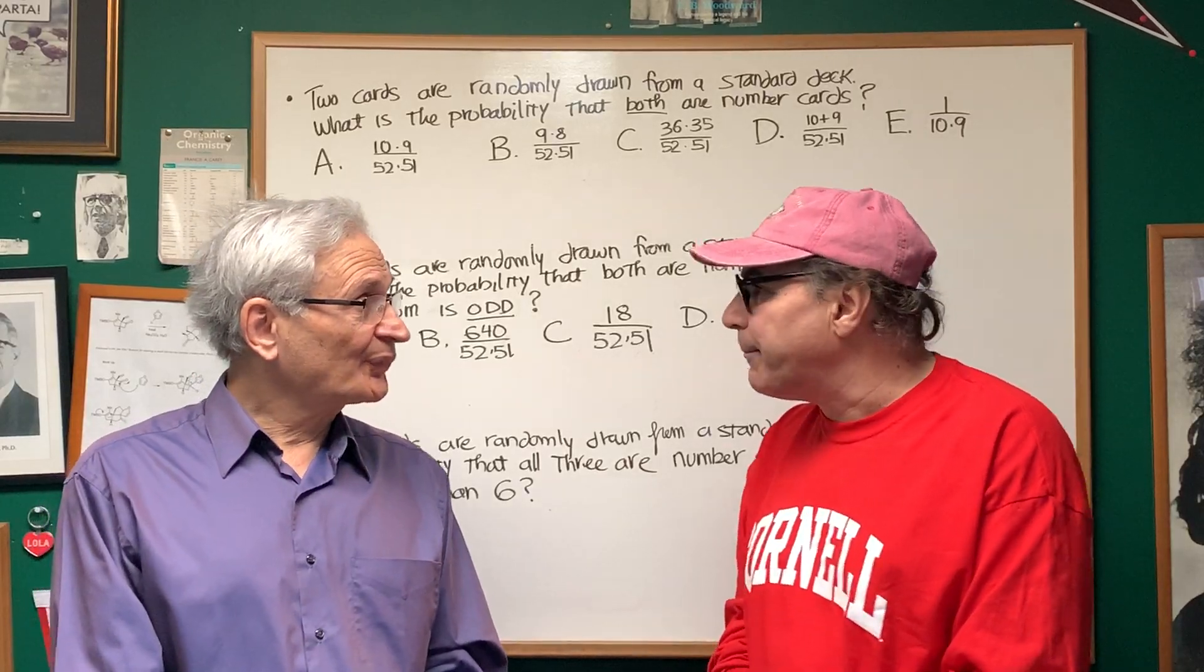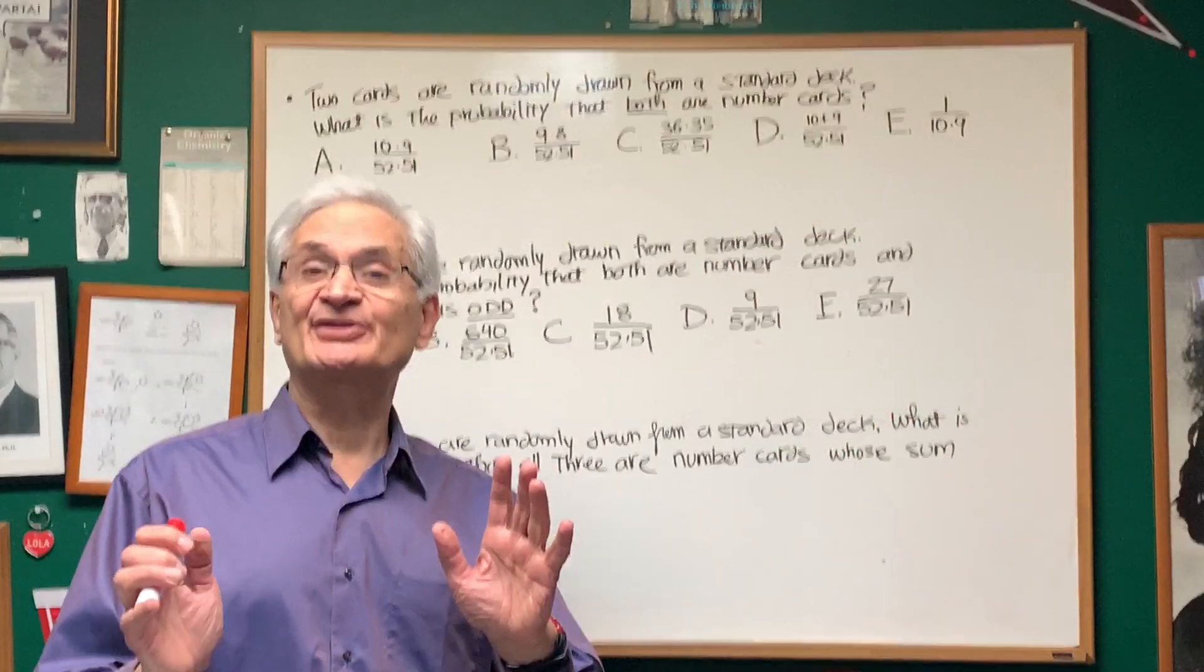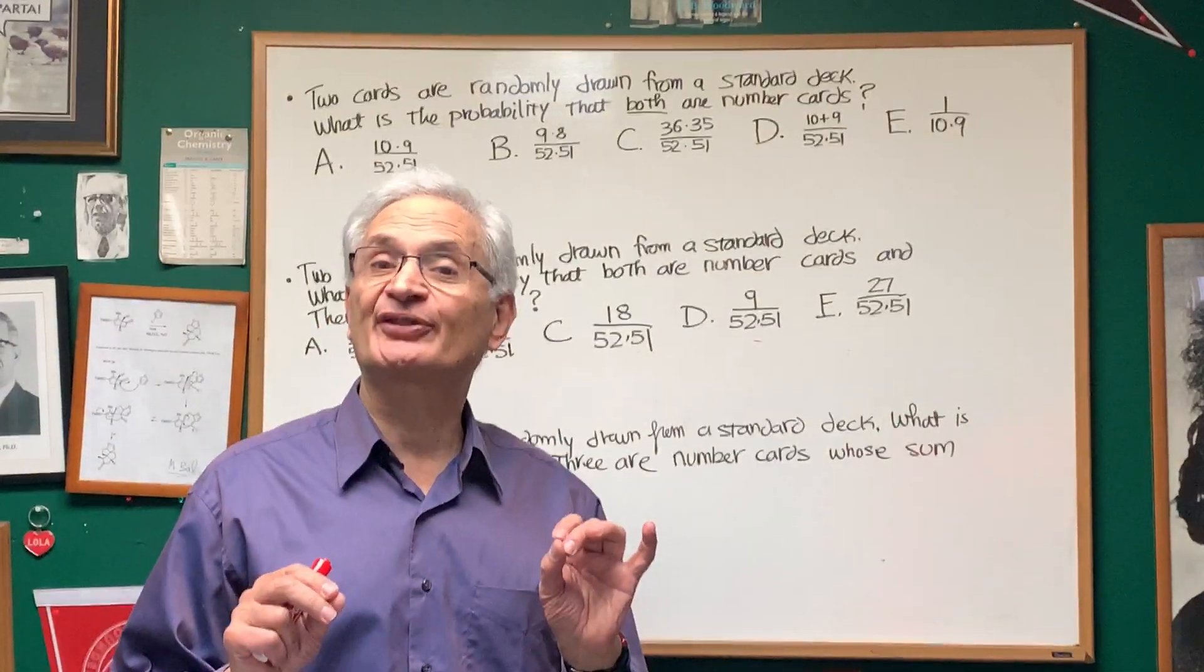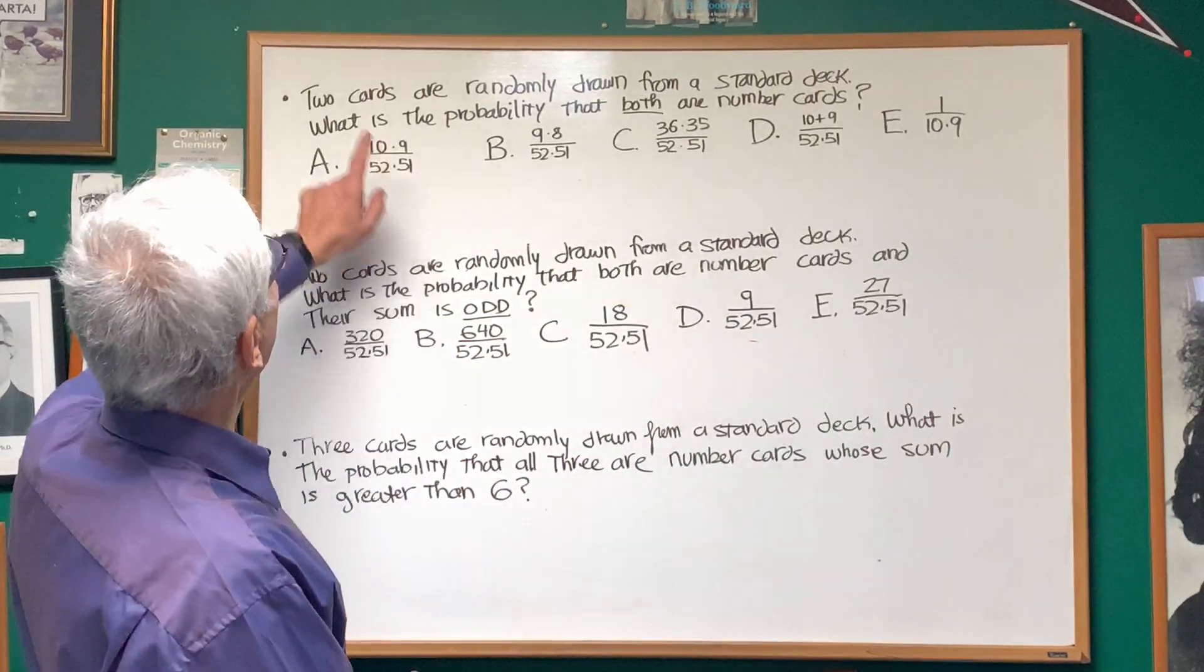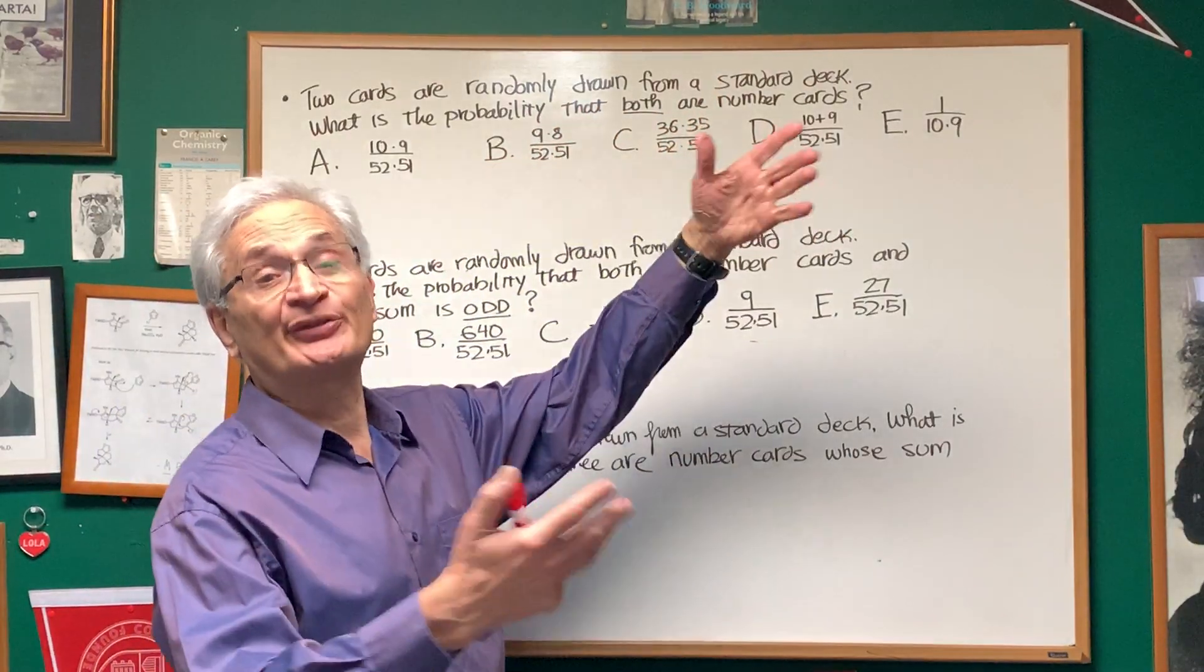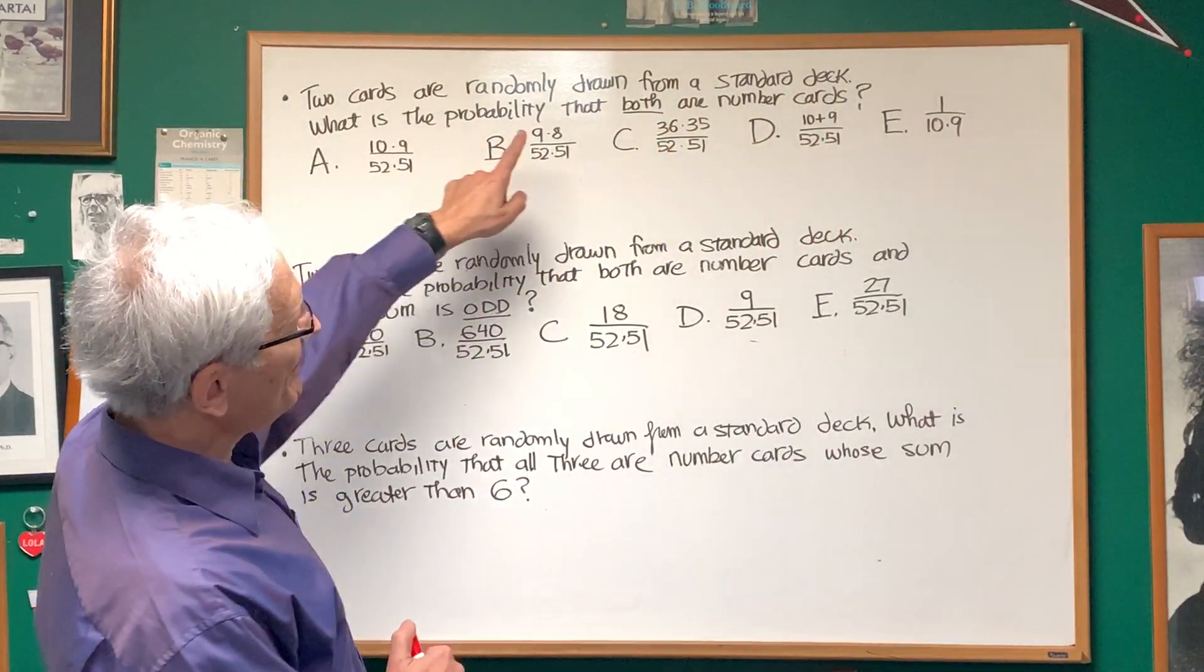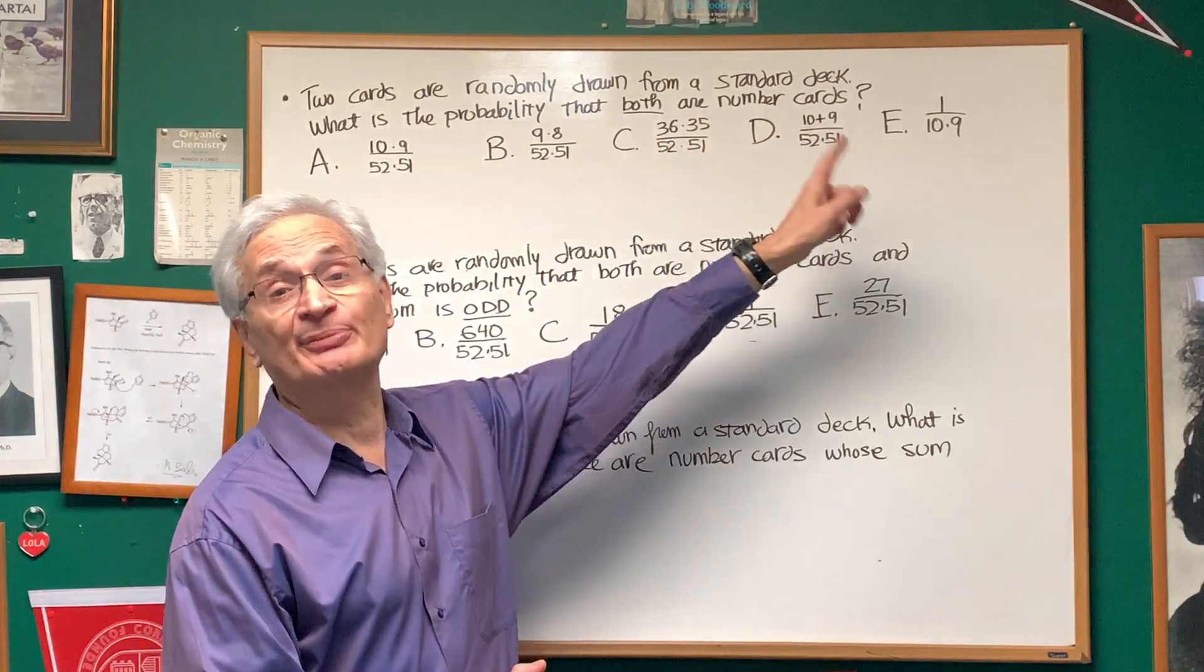All right, Professor, show us a few examples. Okay, yes, these are probability problems dealing with drawing from a deck of cards, a very standard kind of probability problem scenario. Two cards are randomly drawn from a standard deck of 52 cards. What is the probability that both are number cards?